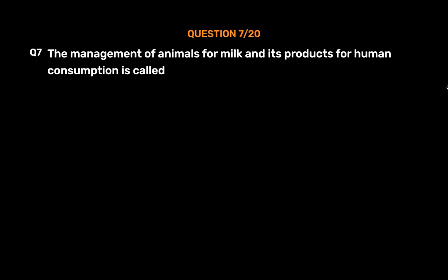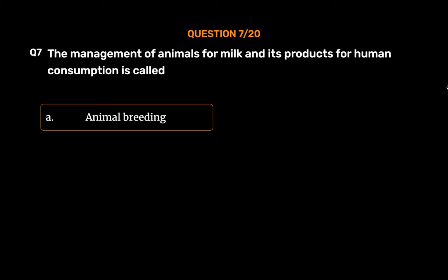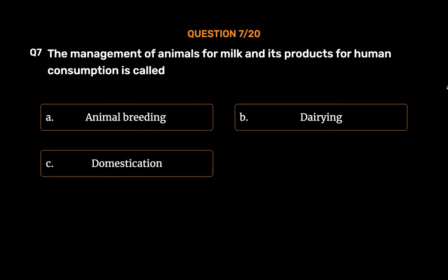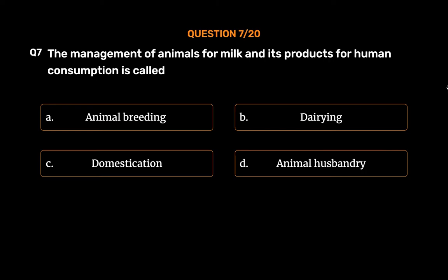Question 7: The management of animals for milk and its products for human consumption is called — Option A: Animal breeding. Option B: Dairying. Option C: Domestication. Option D: Animal husbandry.